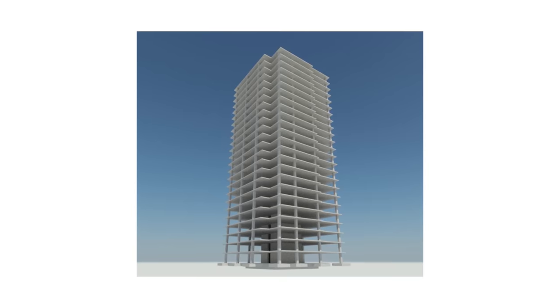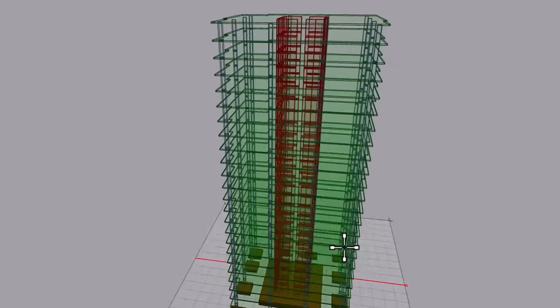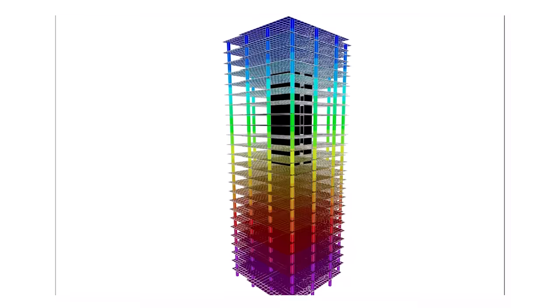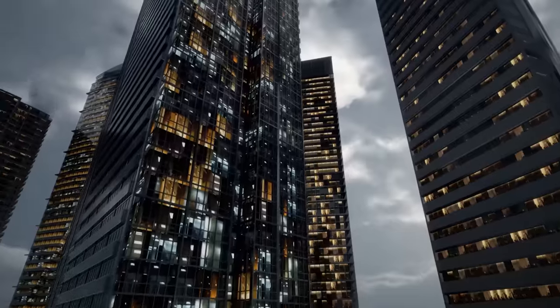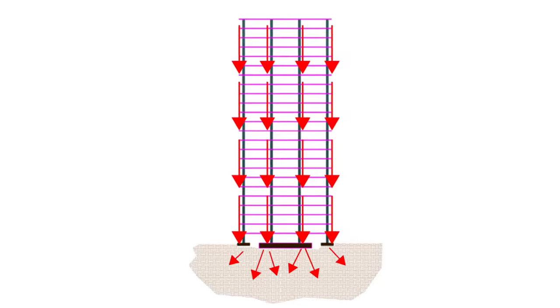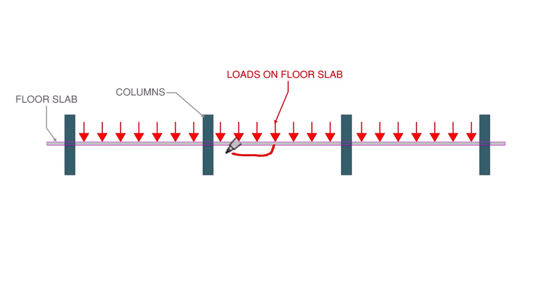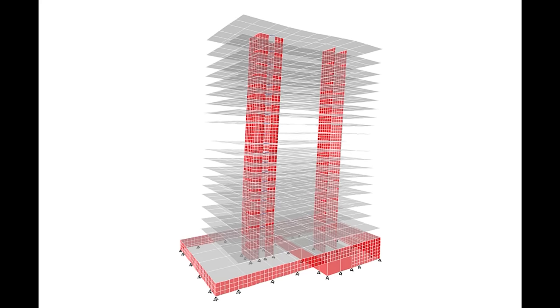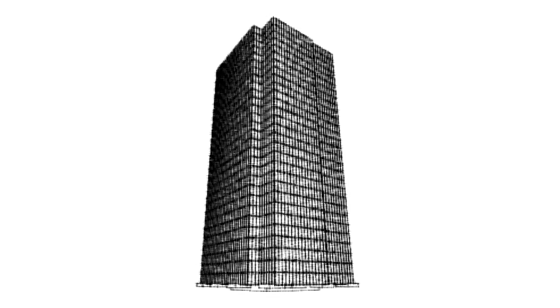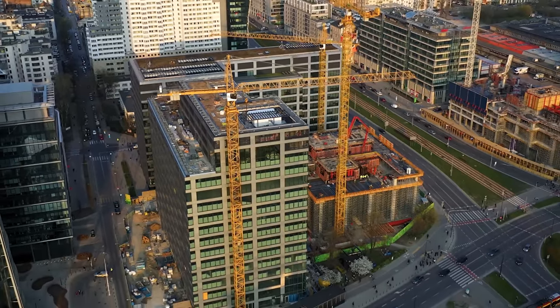Structural engineers are responsible for designing and engineering the structures that we use every day, such as buildings, bridges, and skyscrapers, so they stand up and don't fall down during heavy wind storms or earthquakes. But what do structural engineers actually do? What's their actual analysis and design process? How do they make structures stand up and resist earthquakes? And how do they work with architects and contractors to make the building project come to life?